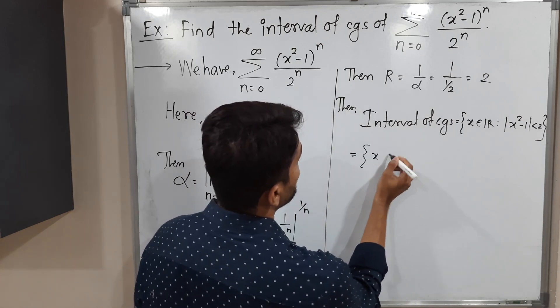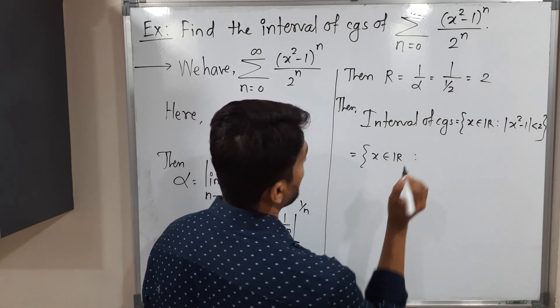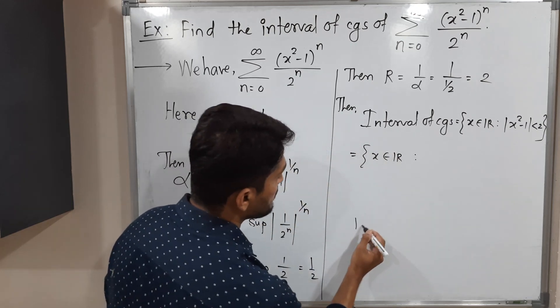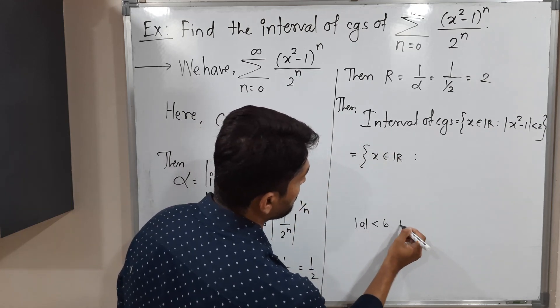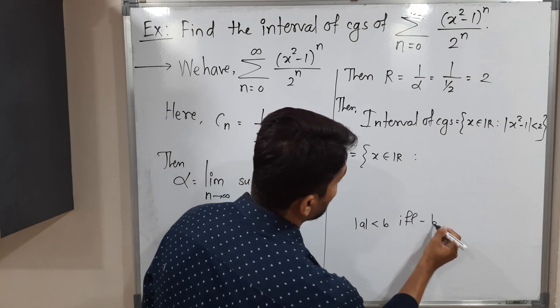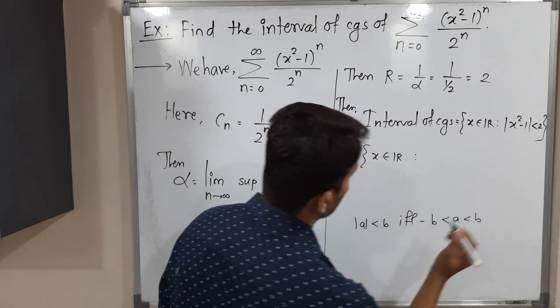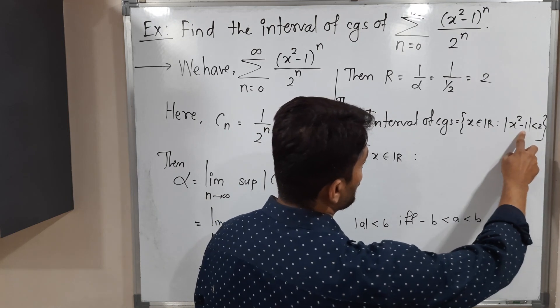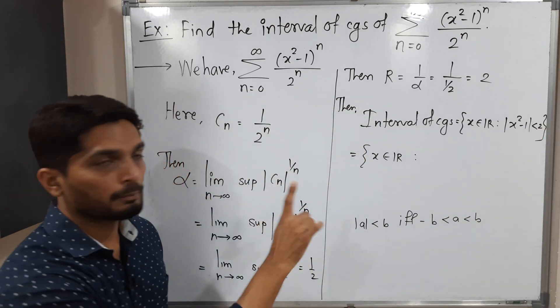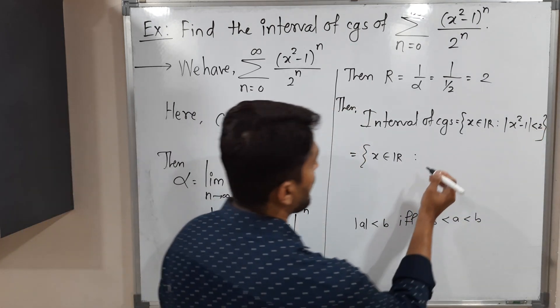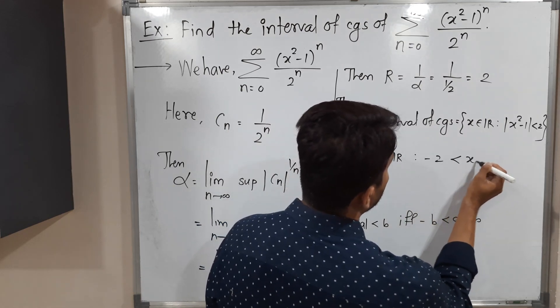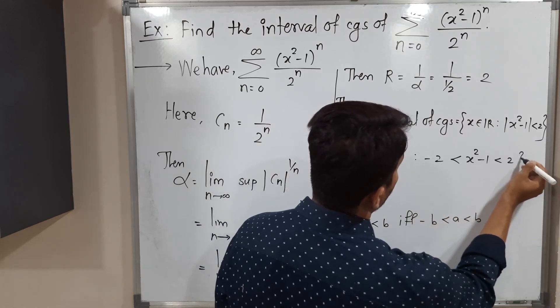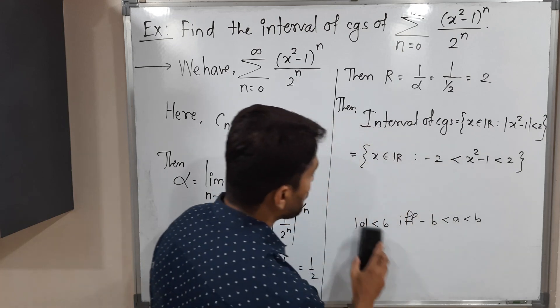This is equal to x belongs to R such that—we are familiar with one result, that is, |a| < b if and only if -b < a < b. So in this case, a is x² - 1 and b is 2. That means this result I am going to apply there, so we'll have -2 < x² - 1 < 2.